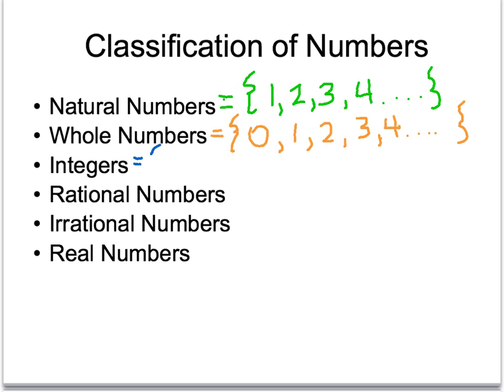Integers is the set that includes negative numbers, zero, and positive numbers. So, negative two, dot, dot, dot, negative one, zero, one, two, and on infinitely.